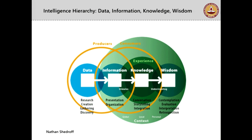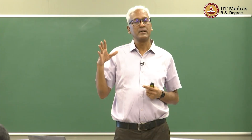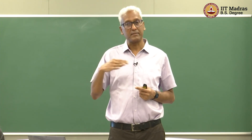This is called the Intelligence Hierarchy, presented by Nathan Shedroff about 15 years ago when he wrote a very thin book on interaction design. He had a very nice framework for thinking about different complexities of design and the objectives associated with that complexity.